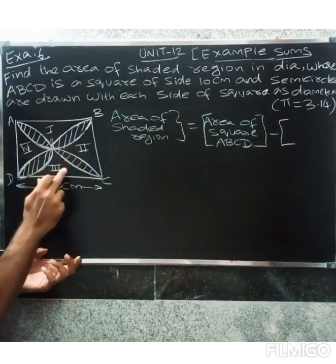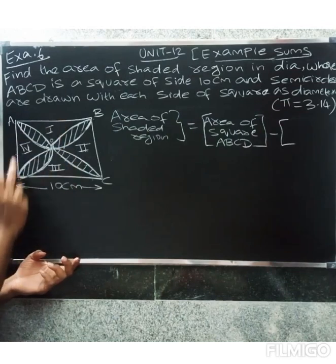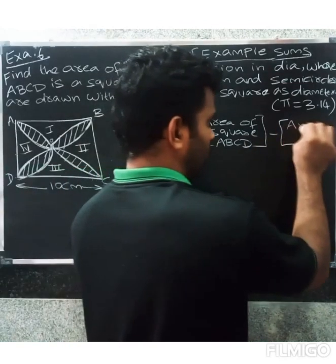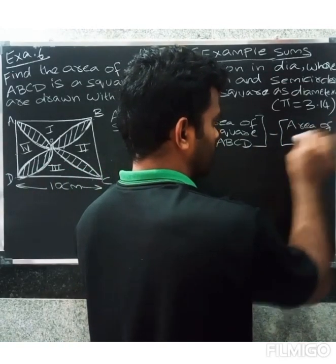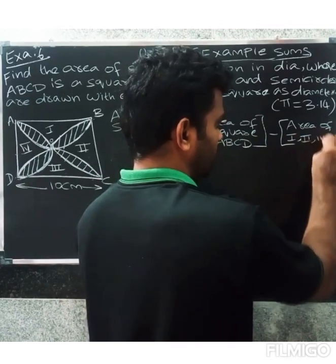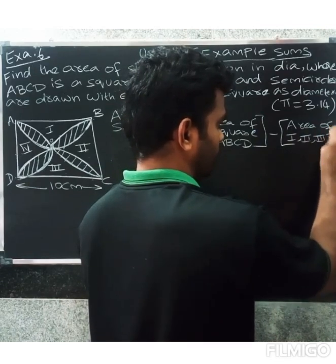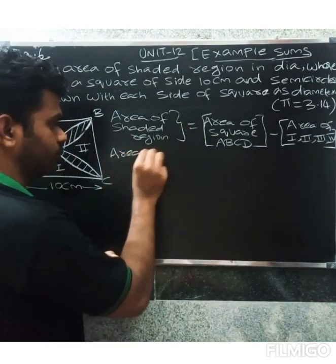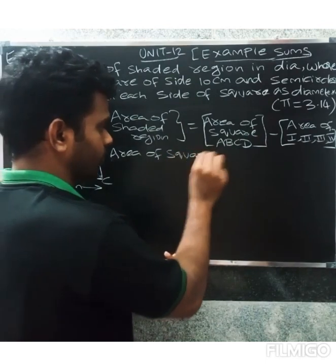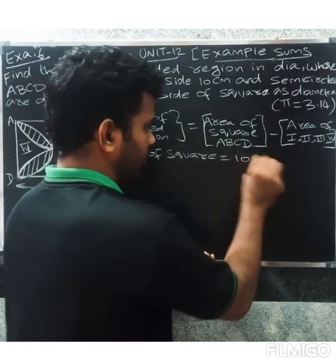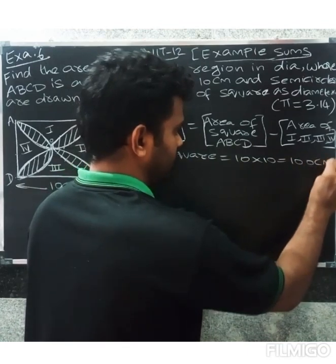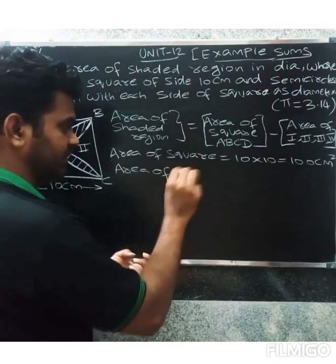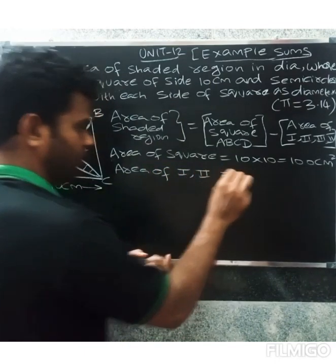The regions are numbered 1, 2, 3, 4. In regions 1, 2, 3, 4 we perform a minus operation. Area of the square equals side times side: 10 into 10 equals 100 centimeter square.